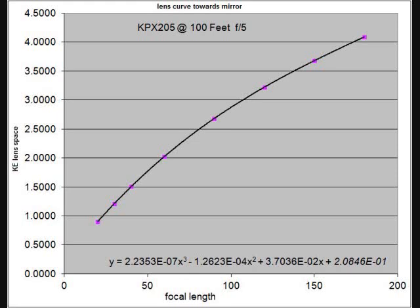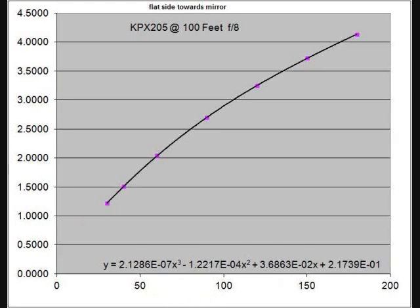This was also using a standard off-the-shelf lens, 300 millimeter focal length, a KPX 205 from Newport. There are three plots here, one for a F3.5, F5, and F8 mirror. So you calculate the spacings for your focal length and then do the interpolation if your mirror is somewhere in between.